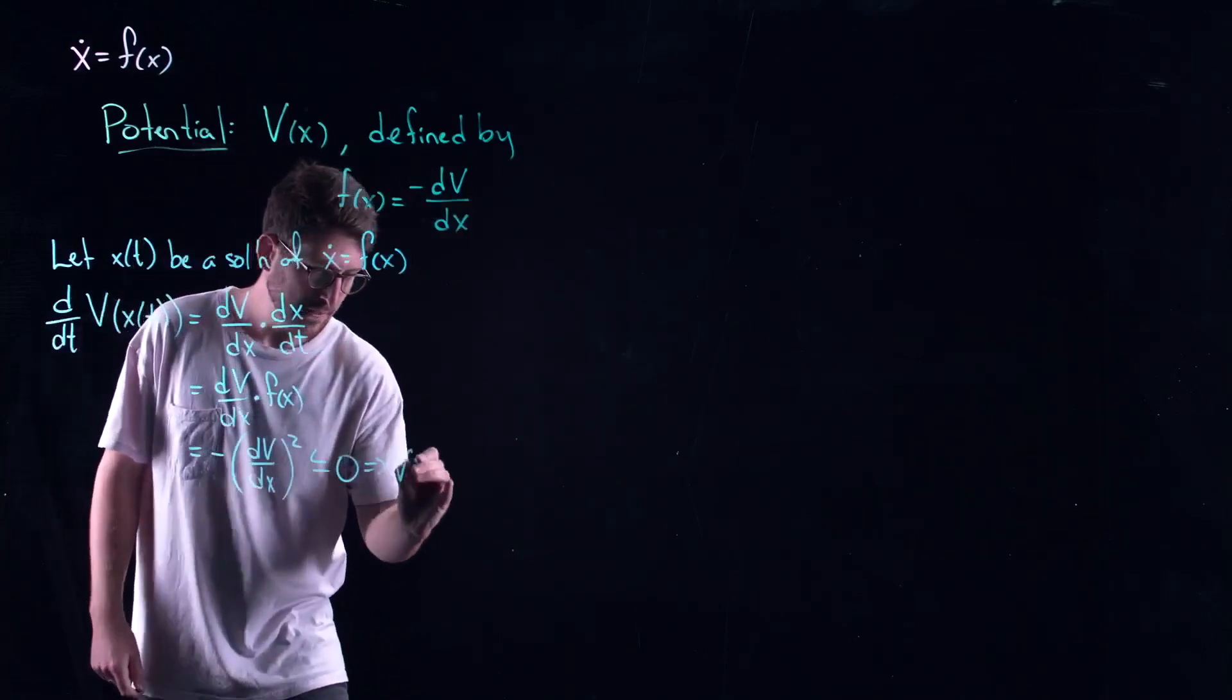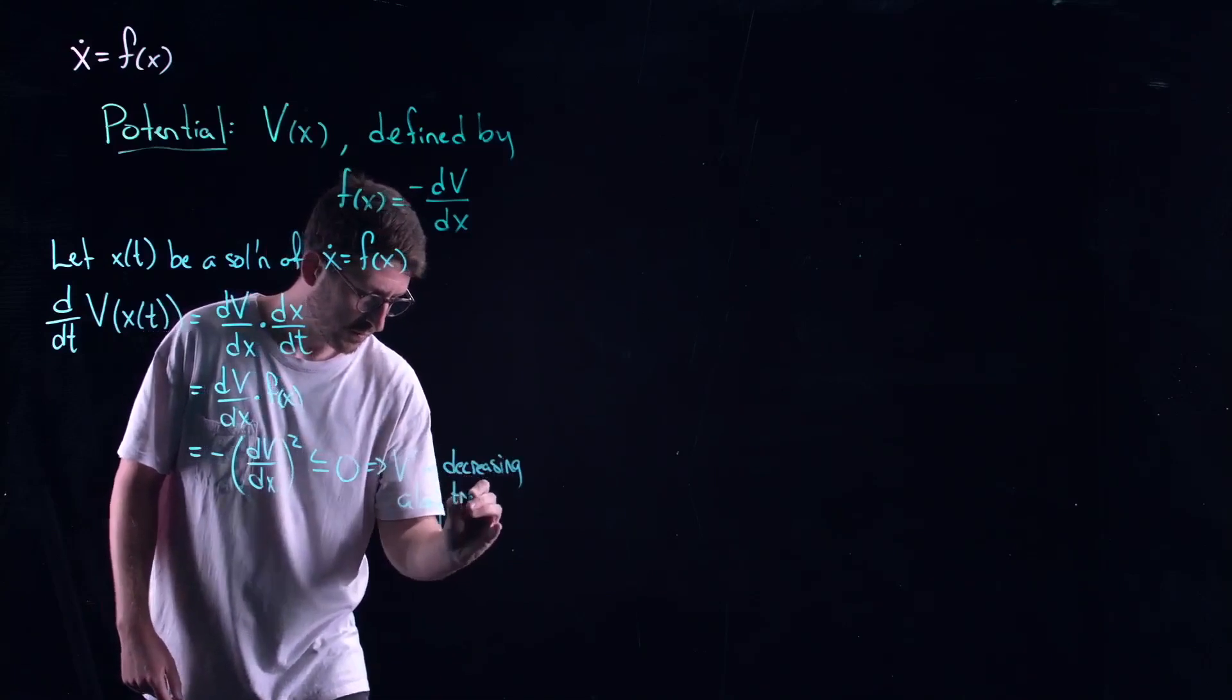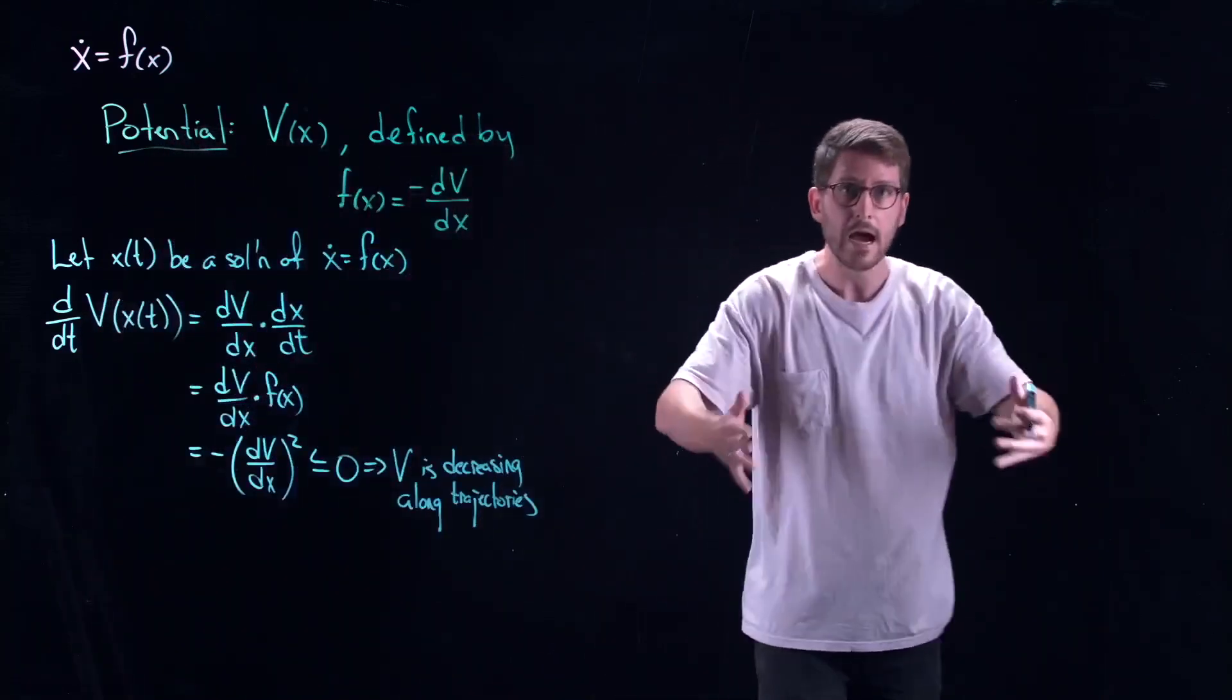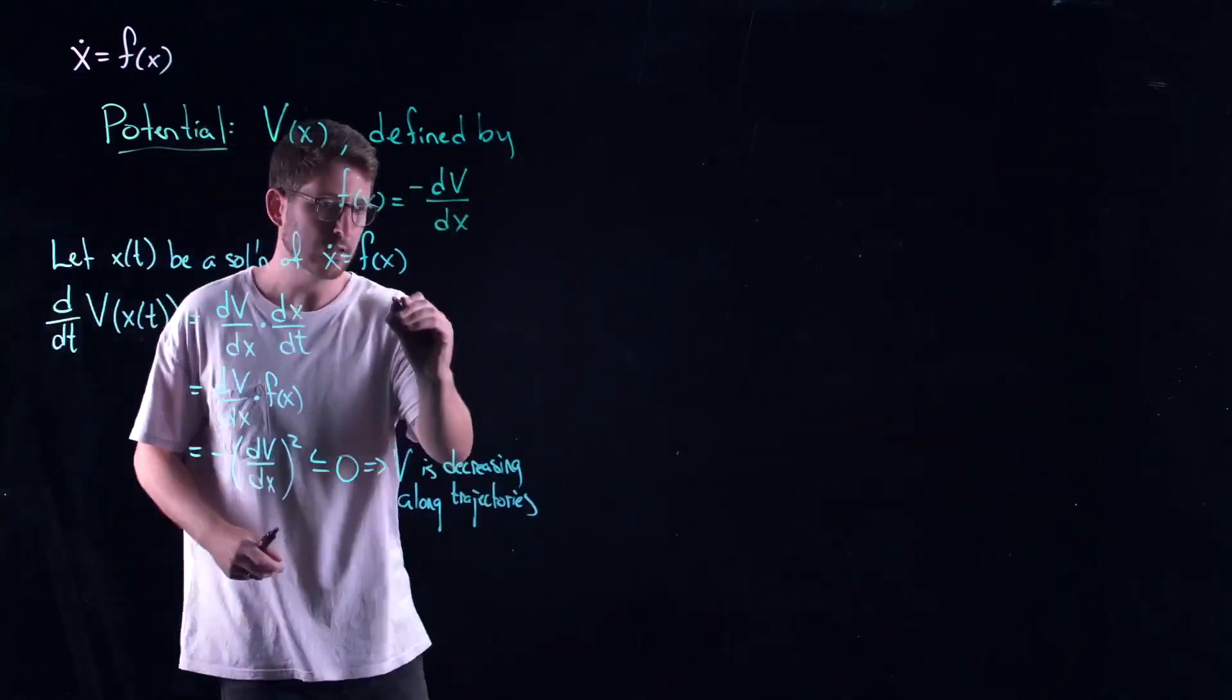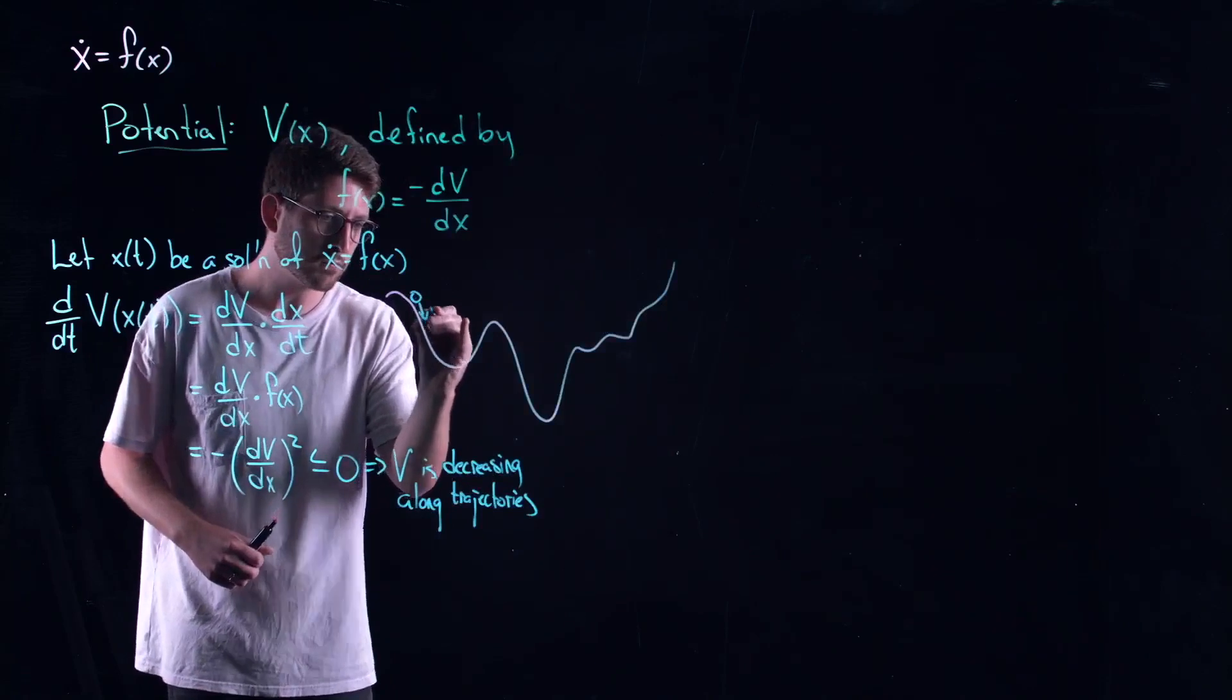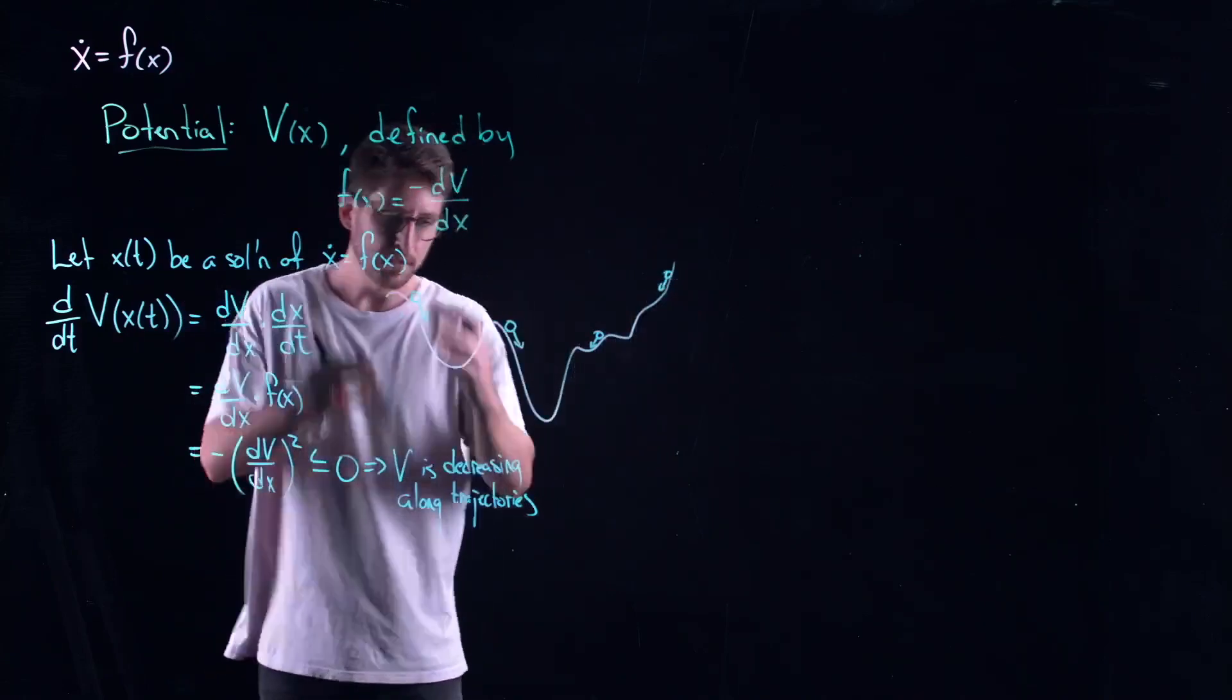So this tells me that v is decreasing along trajectories. This is where that minus sign comes in. You think of yourself rolling downhill. So if you have a sort of general picture of what v might look like, maybe it's something like this. You have a sort of particle that's rolling down the hills of this thing. Okay so maybe I'm going to show a whole bunch of different particles. Wherever they might be starting. But they're rolling down.